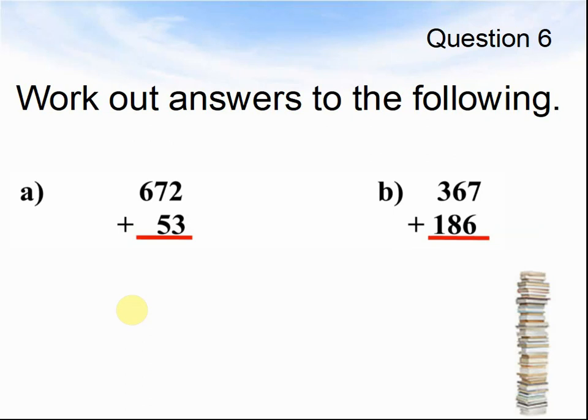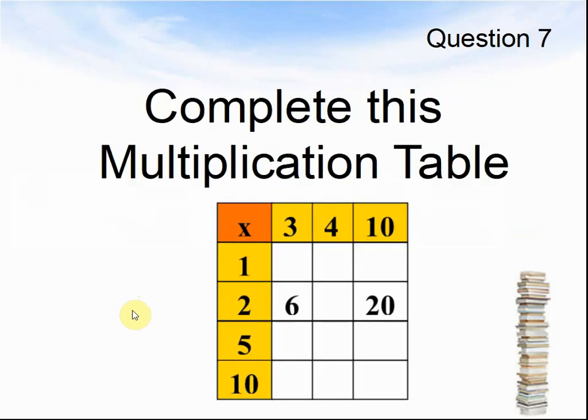Here comes question 7. Complete this multiplication table. You complete it like this: 2 times 3 makes 6, 2 times 10 makes 20. So what would 1 times 3 make? What would 1 times 4 make? What would 1 times 10 make? Pause the video until you are ready for question 8.